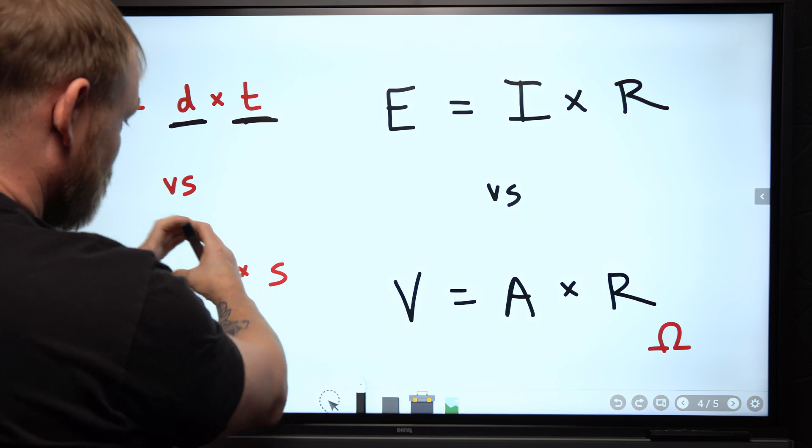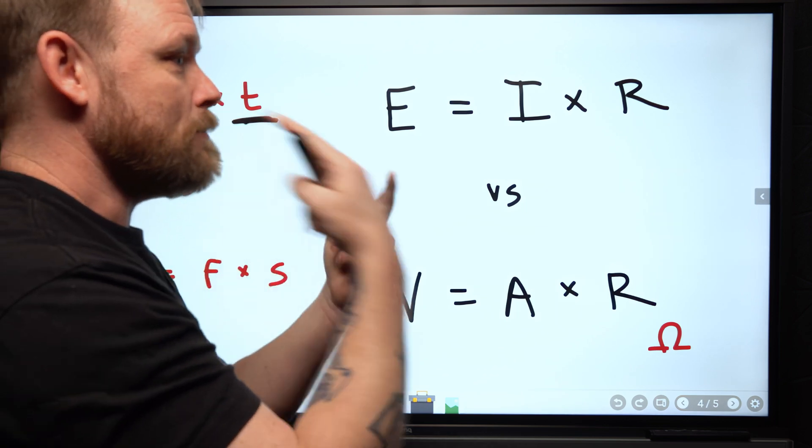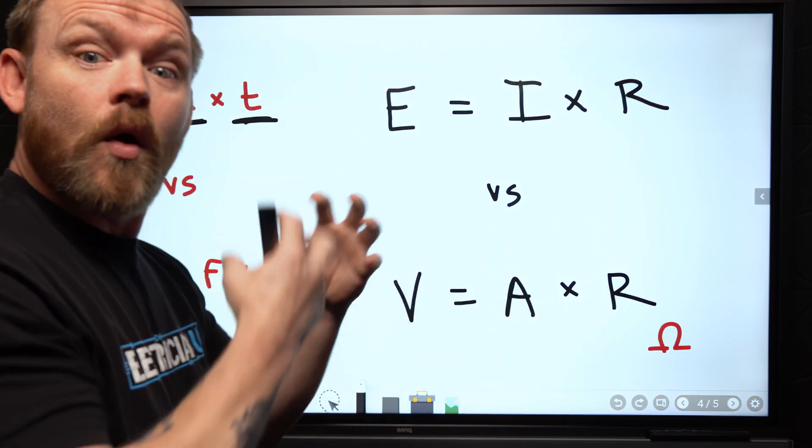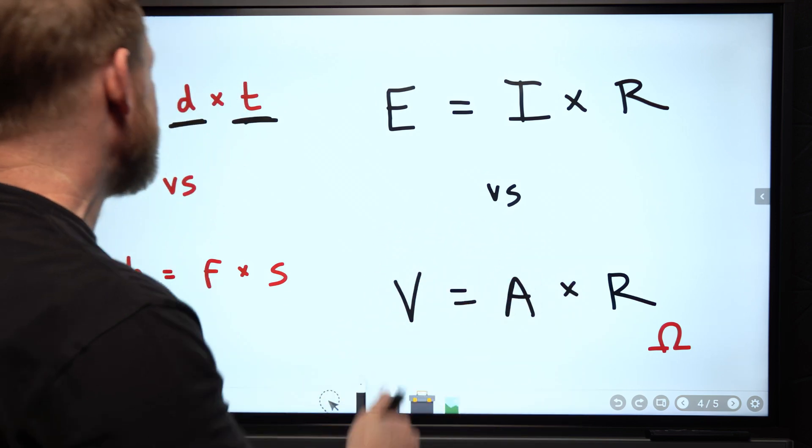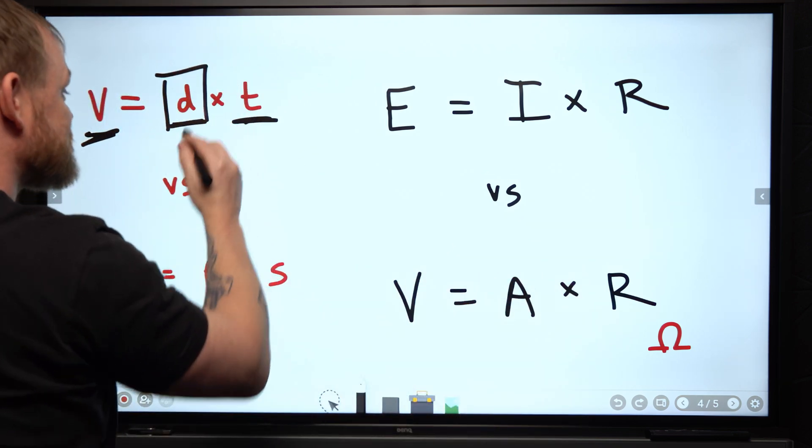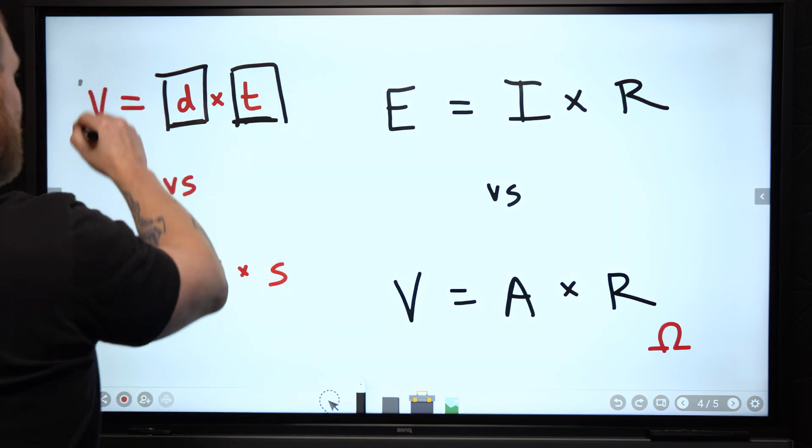The distance is measured in feet, or it can be measured in meters or kilometers, right? So all of these different units of measure are different ways, but the actual thing being measured is the distance, the time, and the velocity.